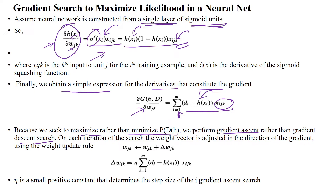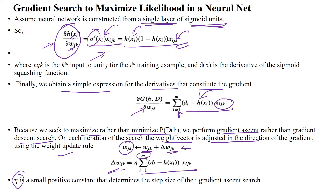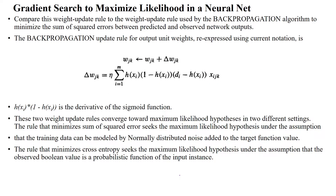On each iteration, we are searching the weight vector that is adjusted in the direction of the gradient using the weight update rule. The new weight equals the old weight plus the modification — that is, the updated weight. We apply partial differentiation to the weight using this formula for all m number of samples. Here, eta is a small positive constant determining the step size, which is the learning rate.